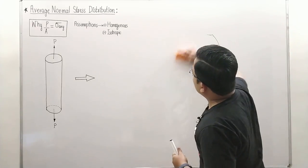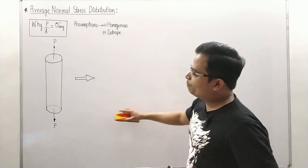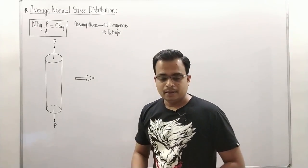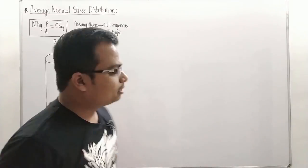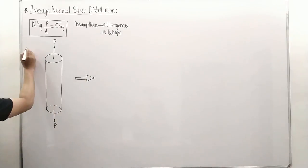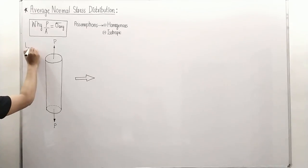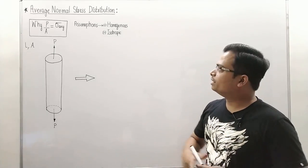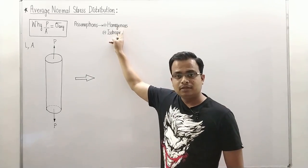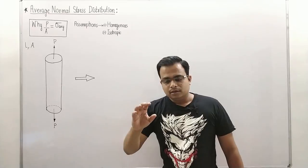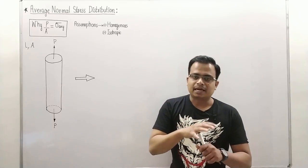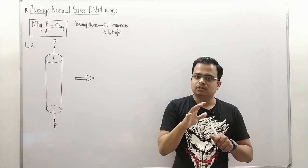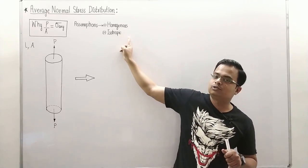For that, we are going to pick up a material. This over here is a cylindrical rod having length L and cross-section A. One more thing which needs to be kept in mind is that the material is homogeneous and isotropic. In each and every chapter on mechanics of solids, you will see these two assumptions — very, very important.